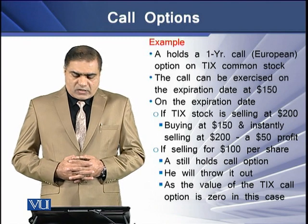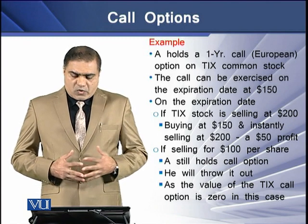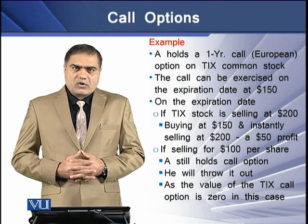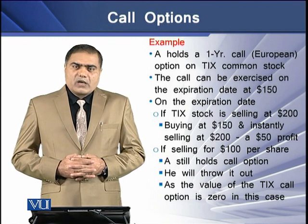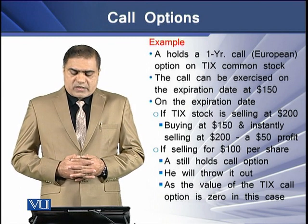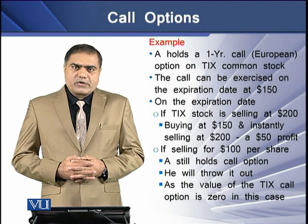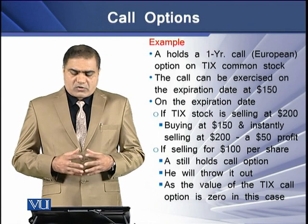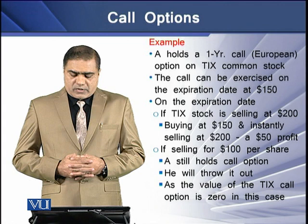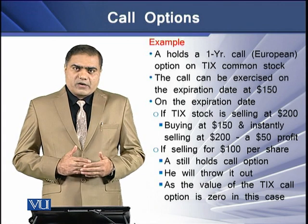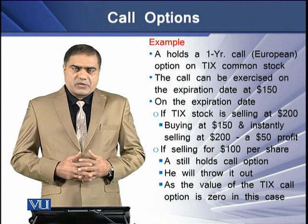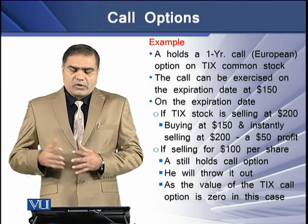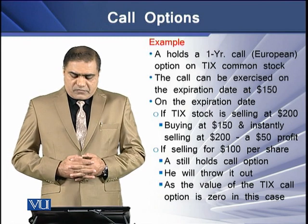Consider another example: Mr. A holds a one-year European call contract on a common stock of a corporate firm, TIX. This call can be exercised on the expiry date at $150 per share. On the expiry date, if the common stock of the company is trading at $200 per share, then buying at $150 and selling instantly at $200 will yield a $50 profit per share for the holder of the call.